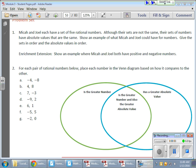Okay, so in today's math lesson we're talking more about absolute value and rational numbers and analyzing the two of them together and their relationship with one another. We have Mika and Joel, each have a set of five rational numbers. Although their sets are not the same, their sets of numbers have the same absolute values. Now this is all about that number line over here. If you know anything about absolute value, we're talking about distance from zero.